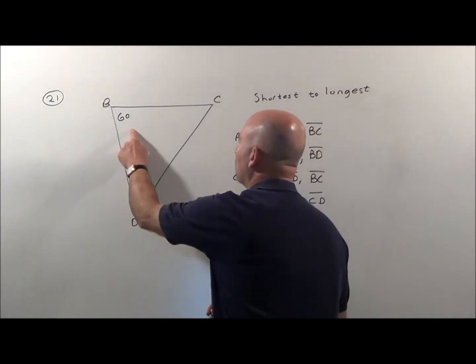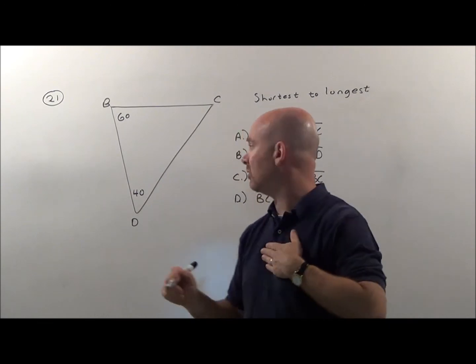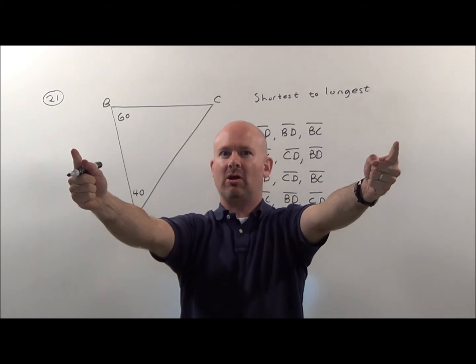Now it gave us two angle measurements. Remember, the sides are based off of the angle across from them, this 40. 40 is like this, so the side across from it is going to be, let's say, this long.